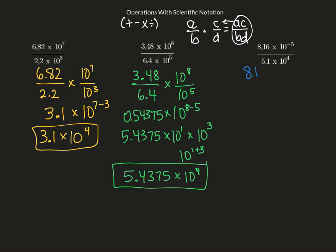For this one: 8.16 divided by 5.1, times 10 to the negative 5 over 10 to the 4th. So 10 to the negative 5 minus 4, giving 1.6. The answer is 1.6 times 10 to the negative 9th.